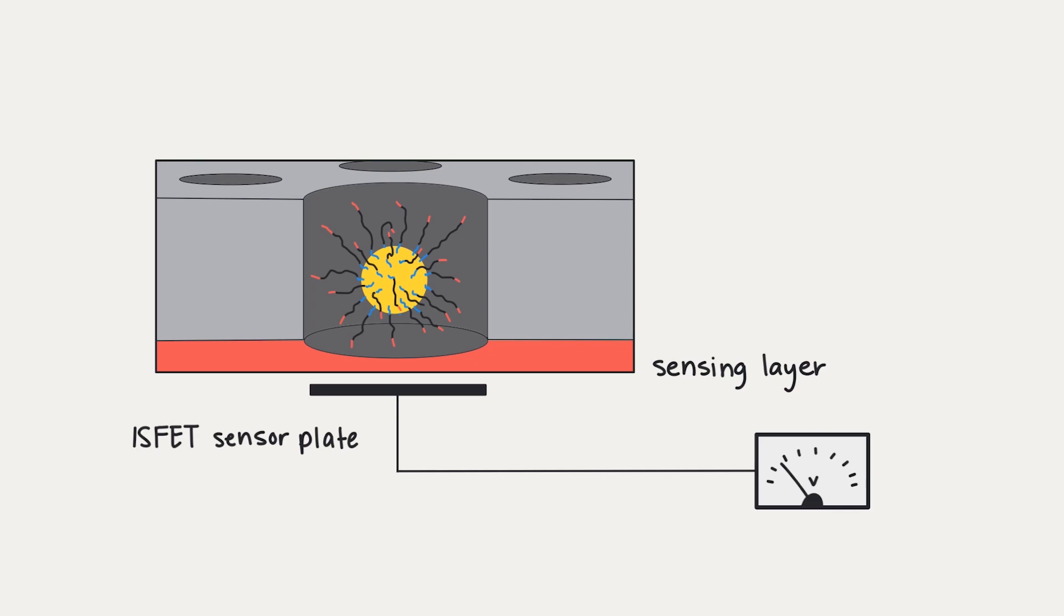Beneath the microwell is an ion-sensitive layer, and below it is an ISFET sensor plate. ISFET stands for Ion Sensitive Field Effect Transistor, which is a transistor used for measuring ion concentrations in solution. So, in our case, when the hydrogen ion concentration changes in a well, it will result in a change in the current through the transistor.